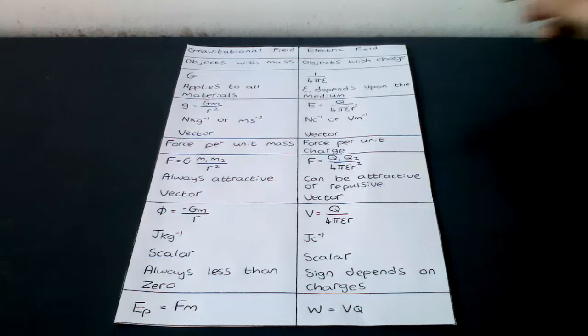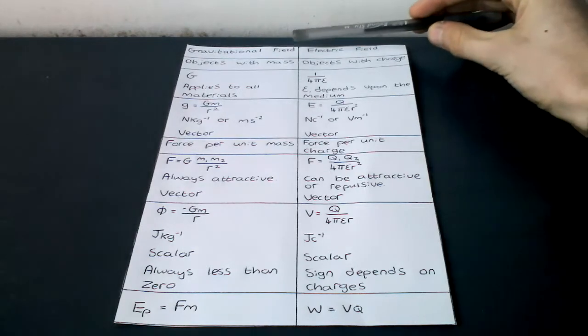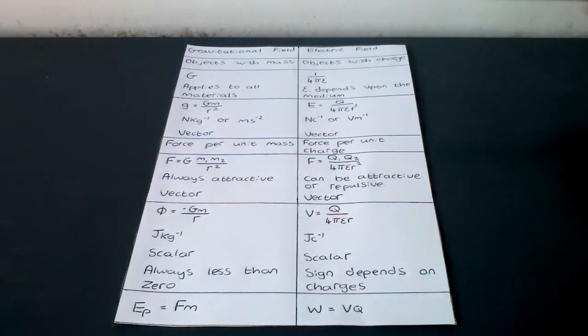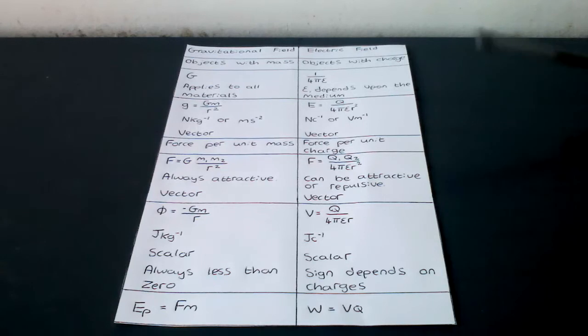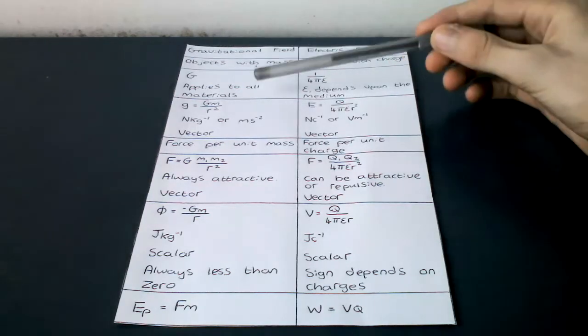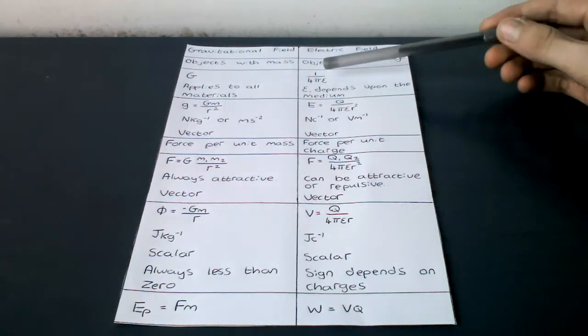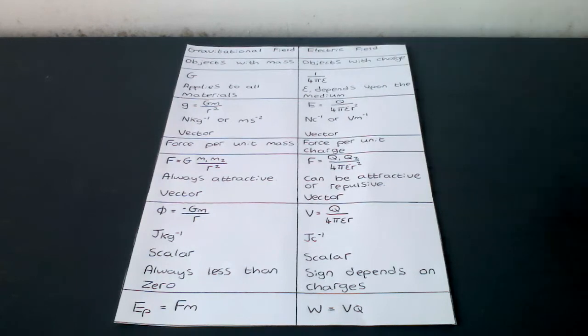So the forces between objects with mass for gravitational fields and objects with charge for electric fields. The constant of proportionality is g, applies to all materials, and 1 over 4 pi epsilon, epsilon depends upon the medium.